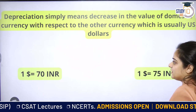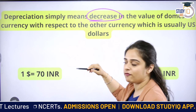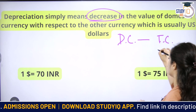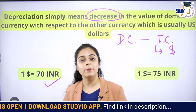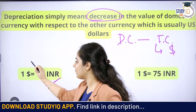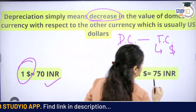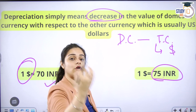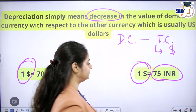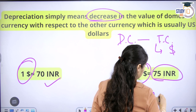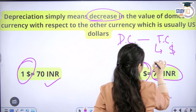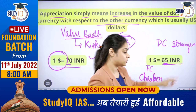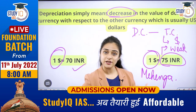Now what is depreciation? It is exactly the opposite. Depreciation simply means decrease in the value of domestic currency in comparison to a foreign currency, say the US dollar. For example, this week when you went to the market to buy a dollar, you took out 70 rupees and got one unit of dollar. But next week when you go to buy a dollar, you now have to take out 75 rupees from your pocket to buy one unit of dollar. That means the dollar has become expensive — the rupee has become weak. That is depreciation.